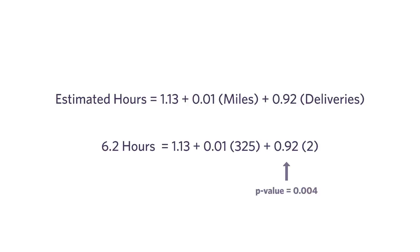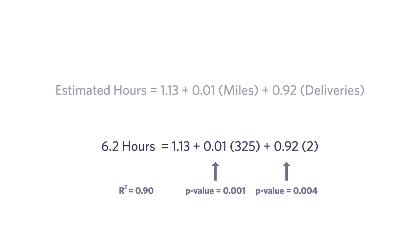For this dataset, I'm getting an R-squared of 0.9, which says that of all the things that influence the travel time, miles and deliveries account for about 90%. The other 10% is due to the noise — the spilling of the coffee, the argument with the wife, the getting pulled over by the police.